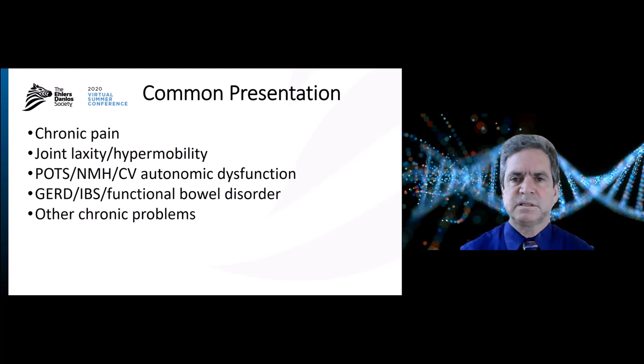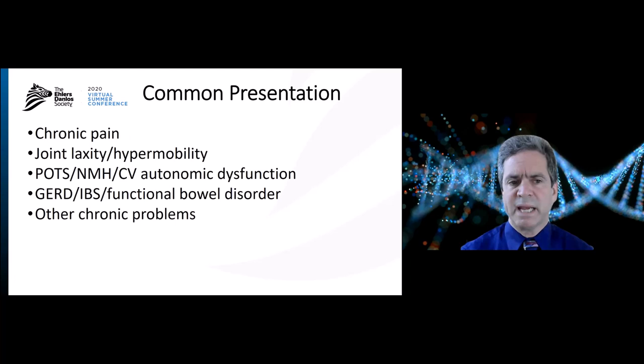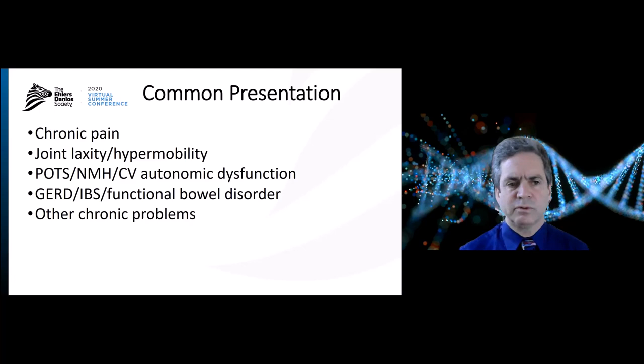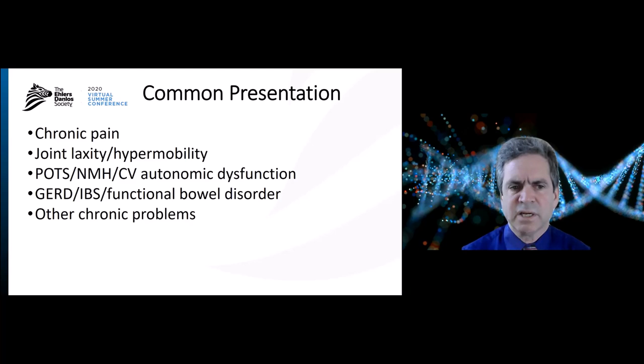Let's start thinking about the types of symptoms that most people are presenting with when they come to a healthcare provider with questions about whether this is Ehlers-Danlos Syndrome. There's often pain, joint laxity, hypermobility, instability. There's a significant increase in likelihood of things like POTS — postural orthostatic tachycardia syndrome — and NMH, neurally mediated hypotension, and cardiovascular autonomic dysfunction. As a group, we're talking about problems regulating heart rate and blood pressure — getting dizzy, lightheaded, or even passing out with standing up quickly, prolonged standing, heat, or dehydration.